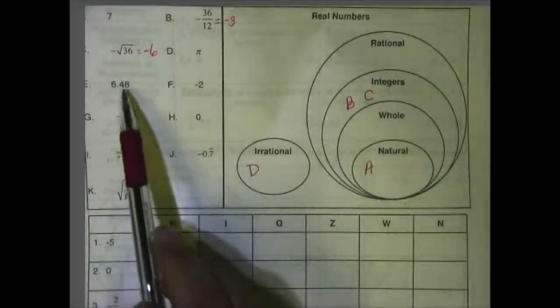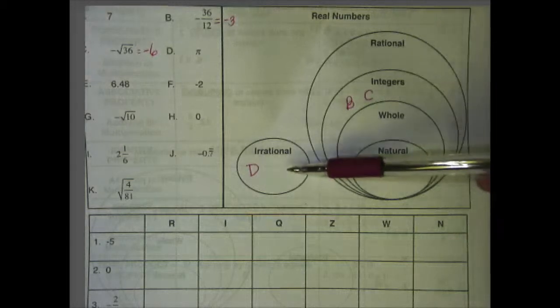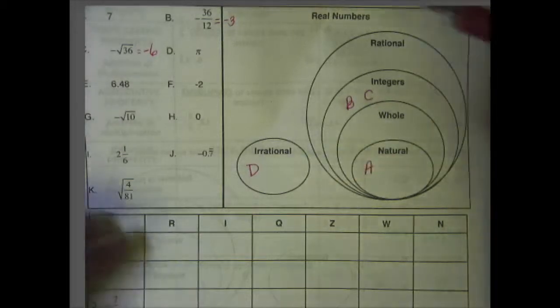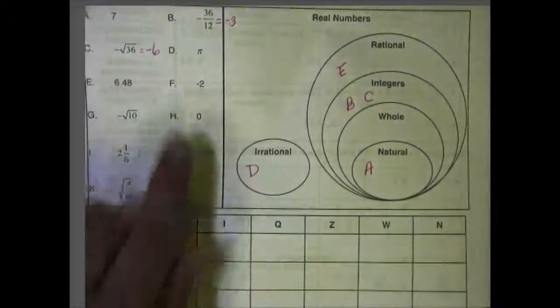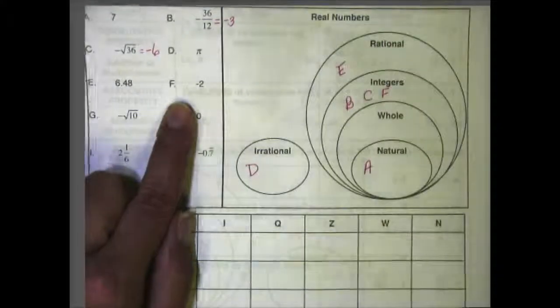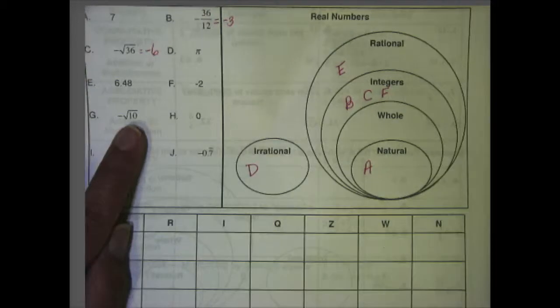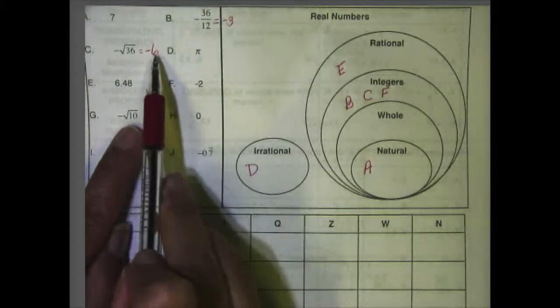E is a decimal. Decimals are only going to fit in two different places: either rational or irrational. To be rational, it has to end, which it does in this case, so E is going under rational. F is a negative number again, and negative numbers are going to fall under integers. G, the negative square root of 10 — 10 is not a perfect square. Perfect squares are ones that when they simplify, they simplify to an integer or whole number. This one does not, so we're going to put G under irrational numbers.